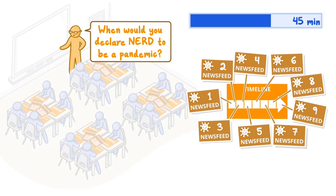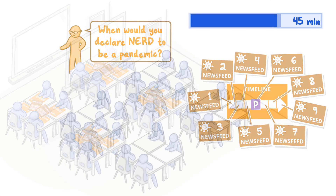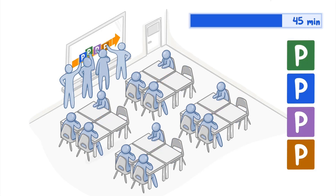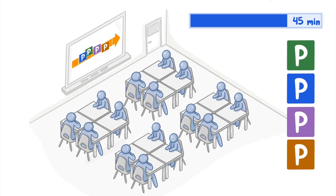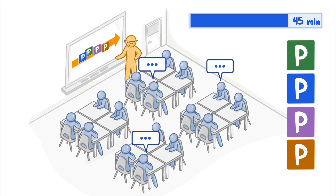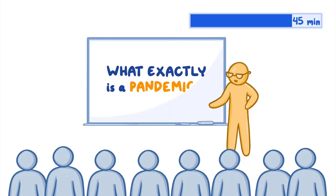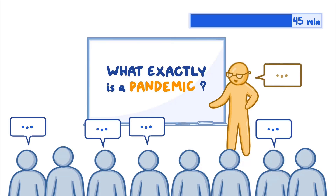After coming to a group consensus, the group should mark a P on their timelines when they think NERD has reached a pandemic level. Hand out a NERD pandemic label card to each group. Ask a representative from each group to indicate where their group decided NERD progressed to a pandemic level by taping their group's pandemic card to the classroom version of the NERD timeline. Cards for each group can be colored for easy identification. Review the placement of the pandemic cards and ask students from each group to justify their answers. Spend the last 10 minutes wrapping up and reviewing what exactly is a pandemic. Suggested discussion prompts are provided in the lesson plan.